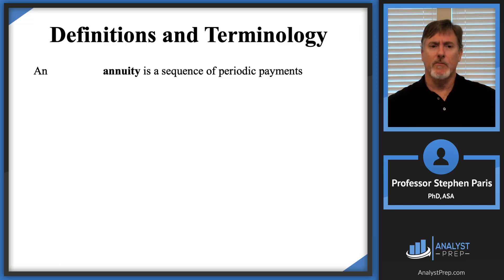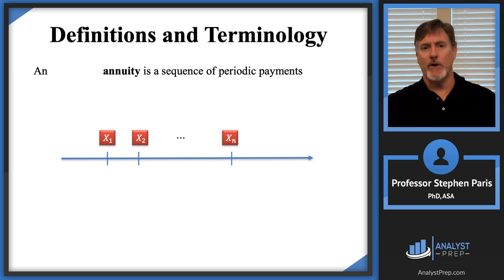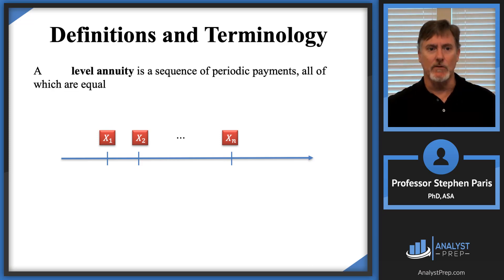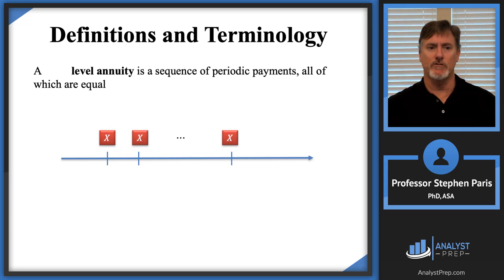An annuity is nothing more than a sequence of periodic payments. Our timeline will have a first payment called X₁, a second payment called X₂, and so forth. We have certain adjectives to describe an annuity. One would be 'level.' A level annuity is a sequence of periodic payments all of which are equal, so X₁ and X₂ are all equal — no need for the subscript. We'll just label them all as X.